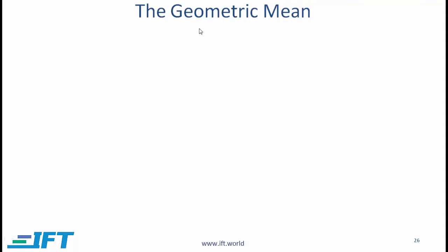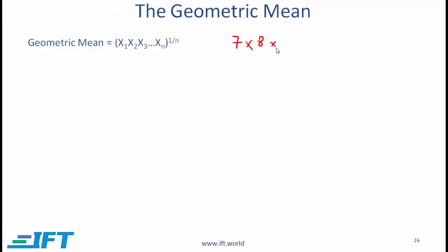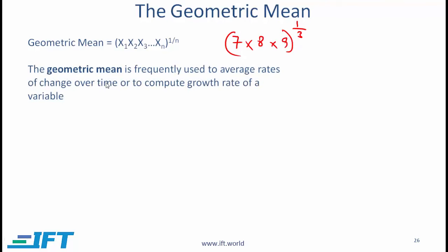Let's now talk about the geometric mean, which we have seen briefly in the previous reading. Mathematically, the geometric mean of n numbers is the product of the n numbers raised to the power of 1 over n. So for 3 numbers — 7, 8, and 9 — the geometric mean would be 7 times 8 times 9, raised to the power of 1/3. The geometric mean is frequently used to average rates of change over time or to compute the growth rate of a variable.